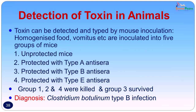Generally the homogenized food or vomitus was inoculated into five groups of mice: one kept unprotected, the second protected with type A antiserum, the third with type B antiserum, and the last with type E antiserum. In this particular patient, groups 1, 2, and 4 were killed and group 3 survived, indicating the infecting organism was Clostridium botulinum type B. With these animal experiments we can type the infecting organism and give specific antiserum — which results in a much better patient response than polyvalent antiserum.